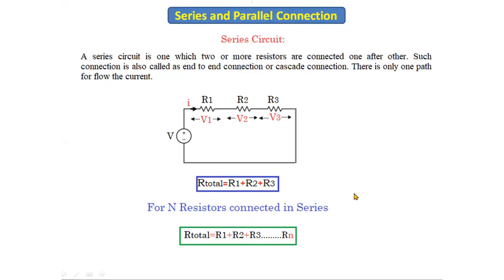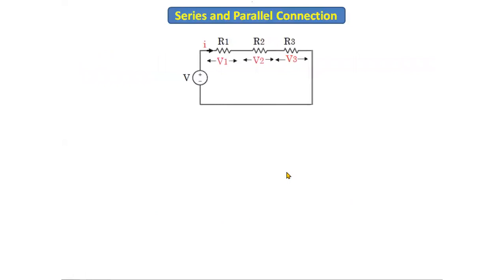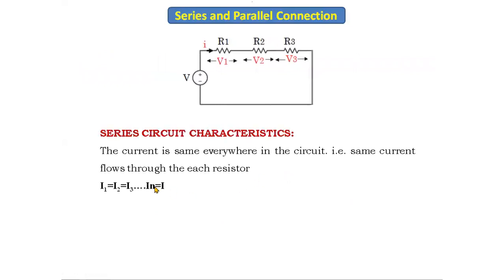Now let's see the characteristics of a series connection. The current is same everywhere in the circuit — the same current flows through each and every resistor. If the current through R1 is I1, through R2 is I2, through R3 is I3, and so on up to In, then in series we can say I1 = I2 = I3 = ... = In. Irrespective of the resistor values, the current is same.